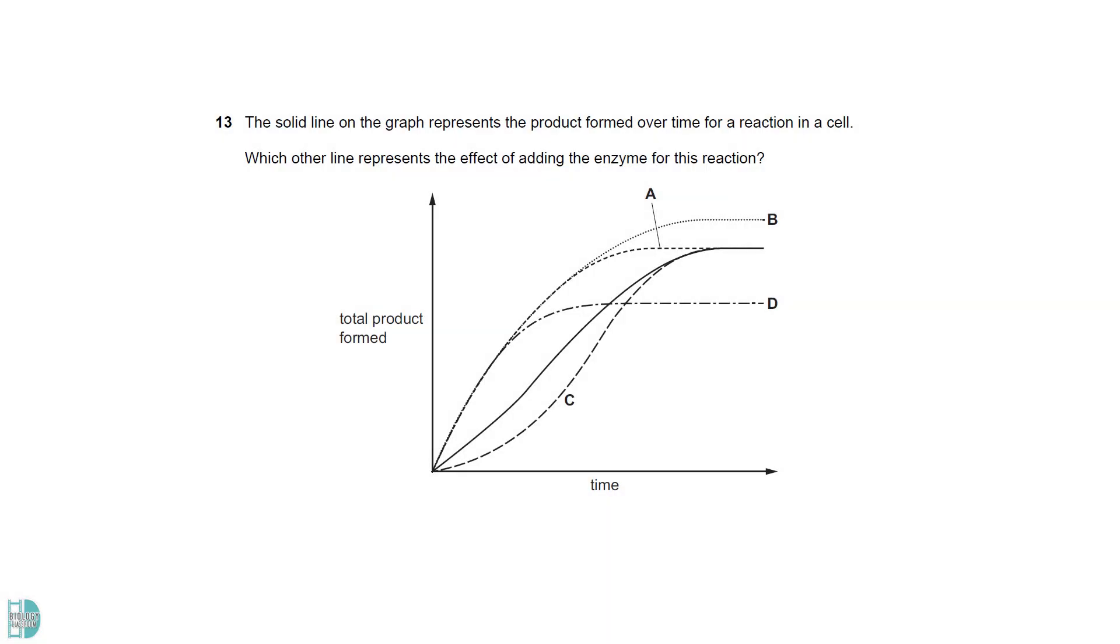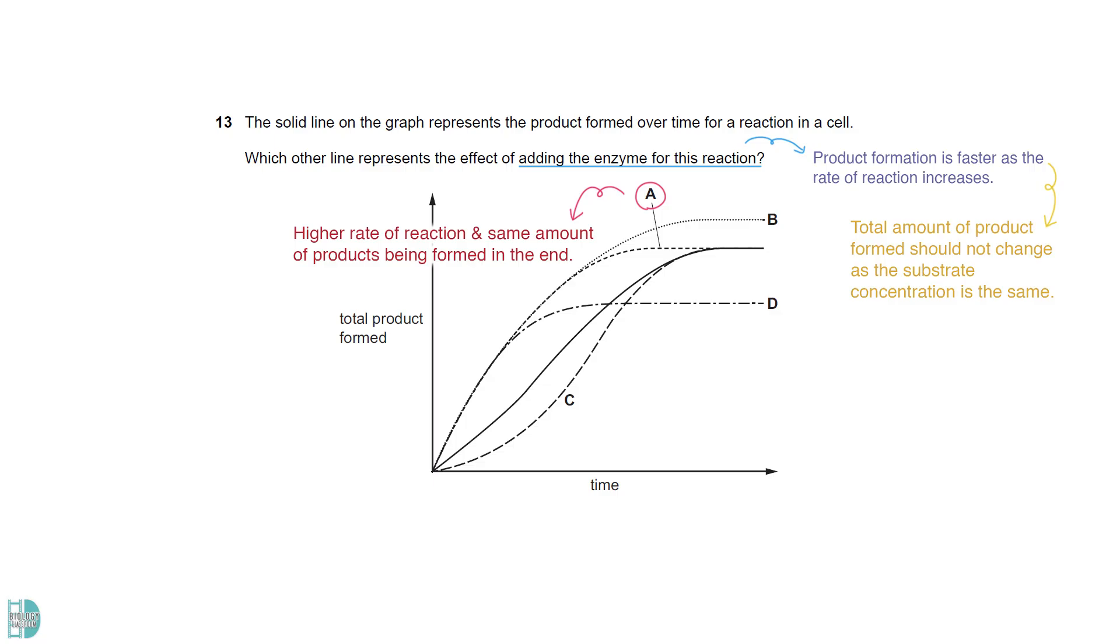When an enzyme is added, product formation is faster as the rate of reaction increases. However, the total amount of product formed should not change as the substrate concentration is the same. A is the correct one as it shows a higher rate of reaction but the same amount of products being formed in the end.